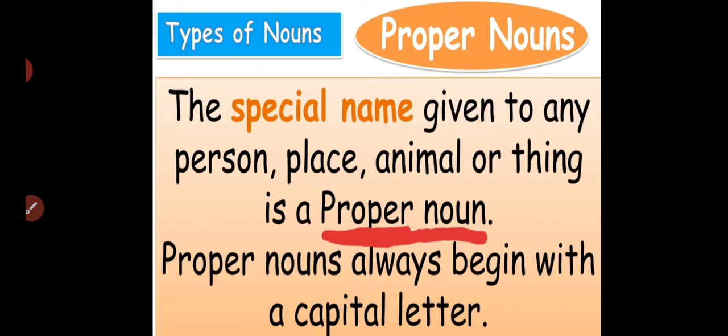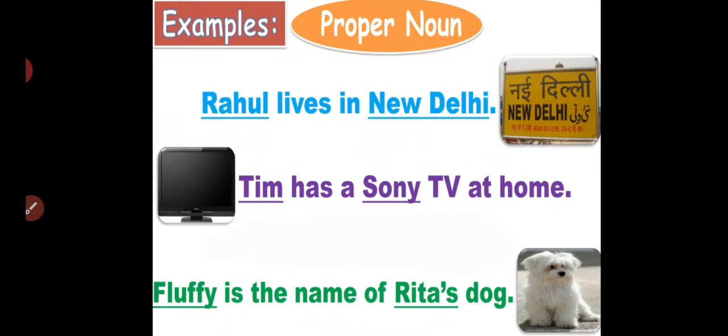What is a proper noun? A proper noun is the special name given to any person, place, animal or thing. You should remember that proper nouns always begin with a capital letter. So when you come across a word that begins with a capital letter in a sentence, you can easily understand it is a proper noun. Now let us look into some examples of the proper noun.